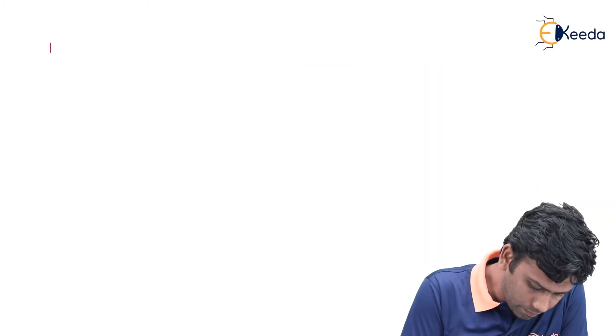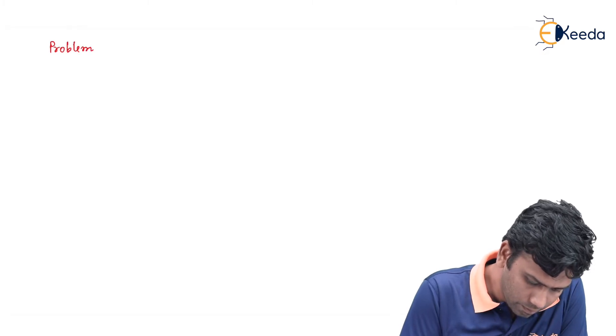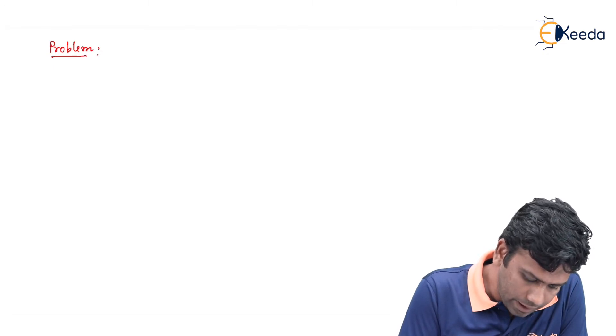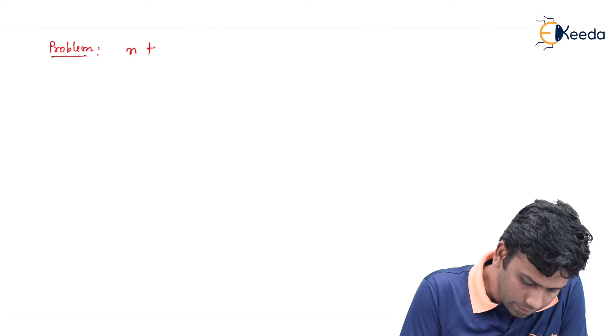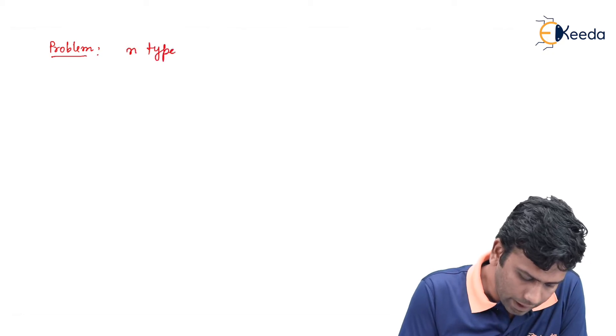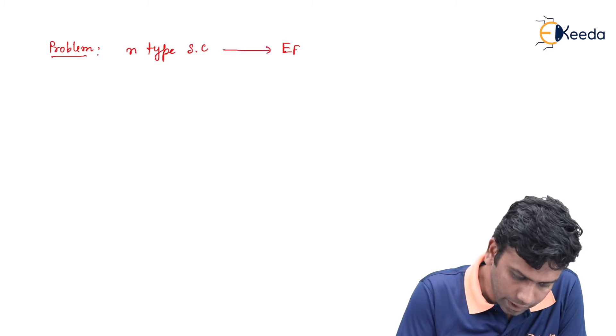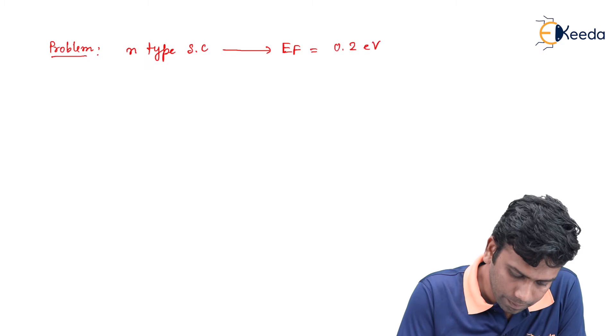The problem looks like this. We have an n-type semiconductor and in this n-type semiconductor the EF value is given by 0.2 electron volt above the EI.